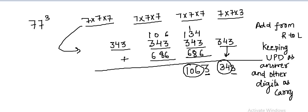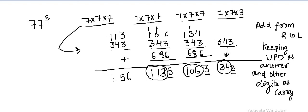Now 6 plus 3 is 9, 9 plus 6 is 15. 8 plus 4 is 12, and 1 carry gives 13. Now 2 plus 3 is 5, 5 plus 6 is 11 — we keep this 5 and bring 113 as carry over. Adding, we have 456. Since this is the last number, we take it as it is. So our answer becomes 456,533.